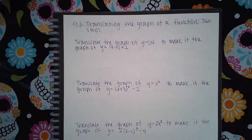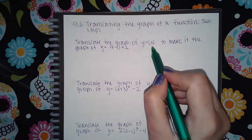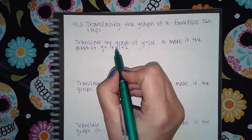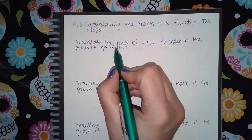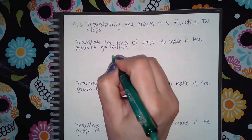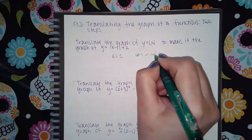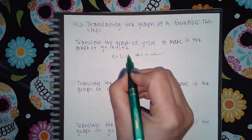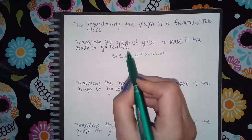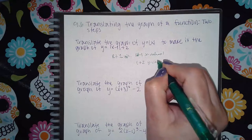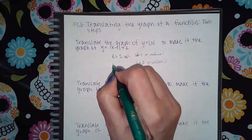Here we have 9.6: Translating the Graph of a Function. If you're doing minus 1 inside, that means you're going to go to the right one — because you do the opposite. You add 1 to the x values, which makes it go right one unit. And then the plus 2 on the outside means you keep the same sign and add 2 to the y values, which means this graph is going to go up 2 units.